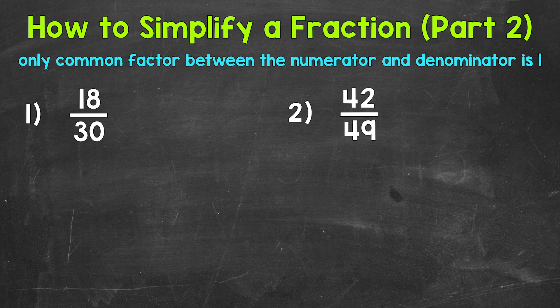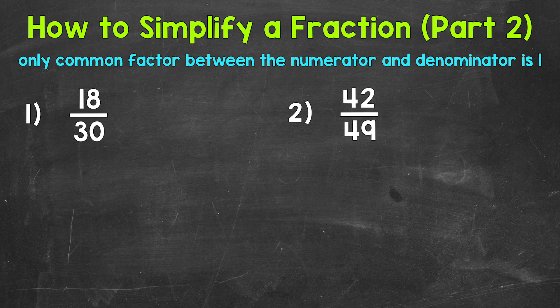When it comes to simplifying fractions, remember we are looking to get the smallest numbers in value that we can for our numerator and denominator — the simplest, lowest numbers. We do this by finding common factors between our numerator and denominator, and then dividing by that common factor. That way we break the fraction down to those lowest, simplest numbers. In part one, we listed the factors for our numerators and denominators, but you want to get to the point where you do not need to do that. So for part two, we are not going to list the factors.